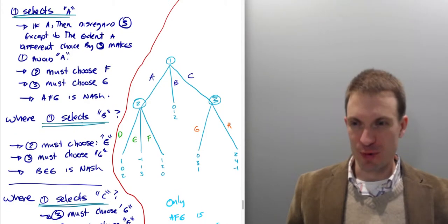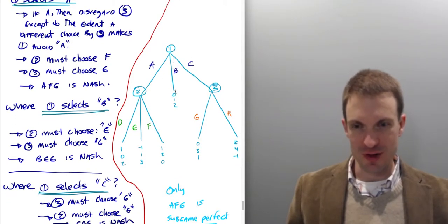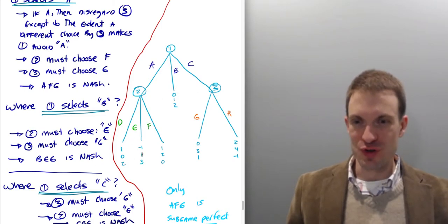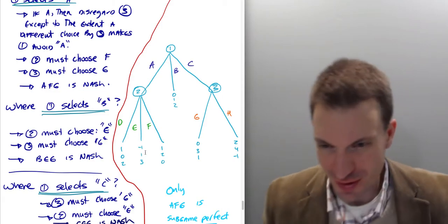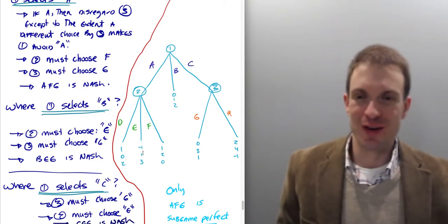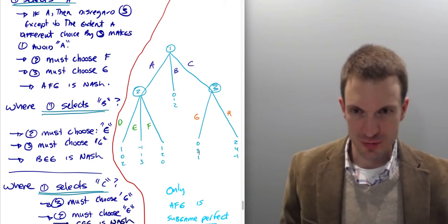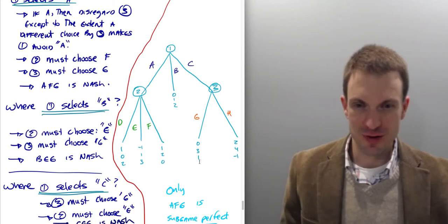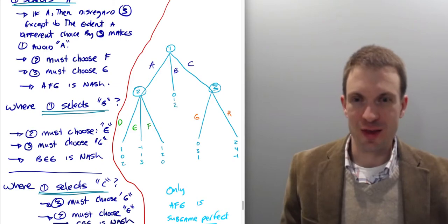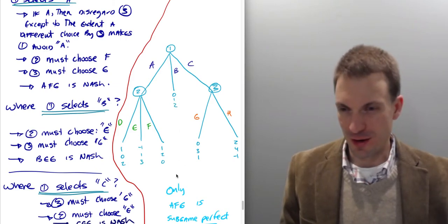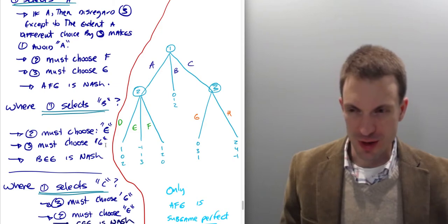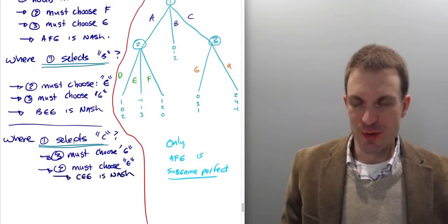Okay. So is there a Nash Equilibrium where player one selects B? Well, if player one selecting B and getting zero here, it must be the case that it doesn't want to switch to A or C. So player two must choose E, and definitely player one would avoid playing A, and then player three must choose G. So player three chooses G, yeah, because one is bigger here, and yeah, they can't improve because, right, so we're good there.